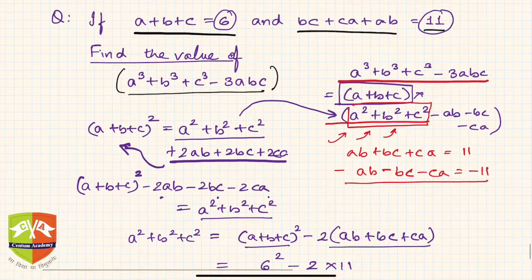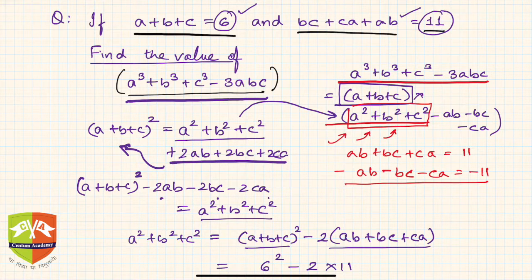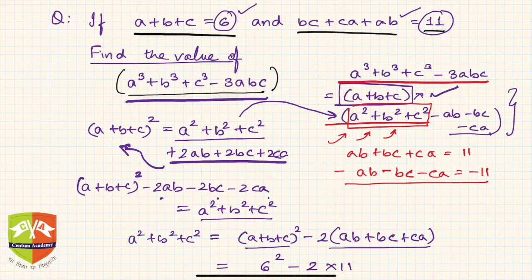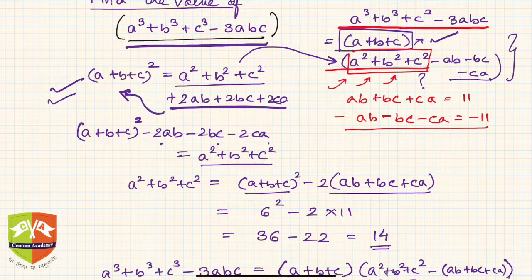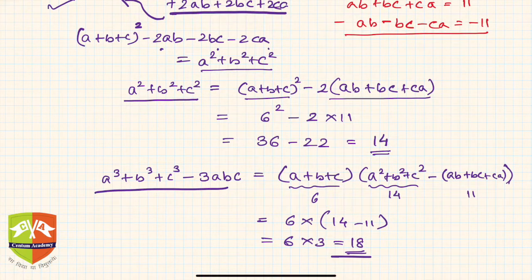Let's revisit: we were given a plus b plus c equals 6, and bc plus ca plus ab equals 11, and had to find a cube plus b cube plus c cube minus 3abc. We applied the identity, found a square plus b square plus c square using a second identity, deployed all values, and got 18. In the same problem, keep in mind you might need to use more than one identity.